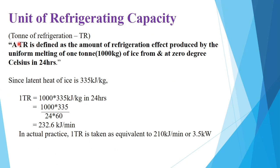Unit of refrigerating capacity is referred to as ton of refrigeration, also written as TR. TR is defined as the amount of refrigeration effect produced by the uniform melting of one ton — equal to 1000 kg of ice — from 0 degrees Celsius in 24 hours.